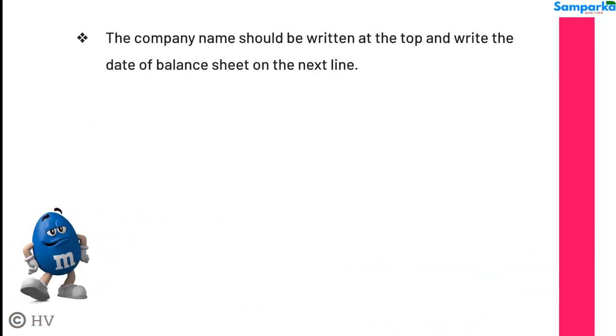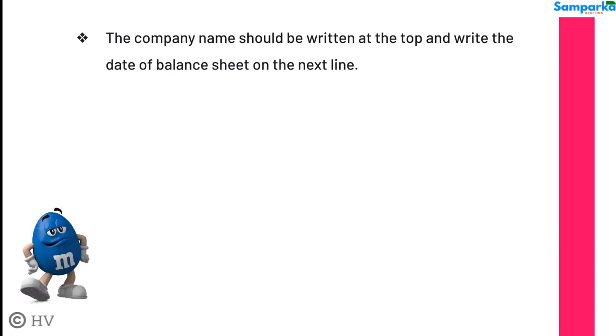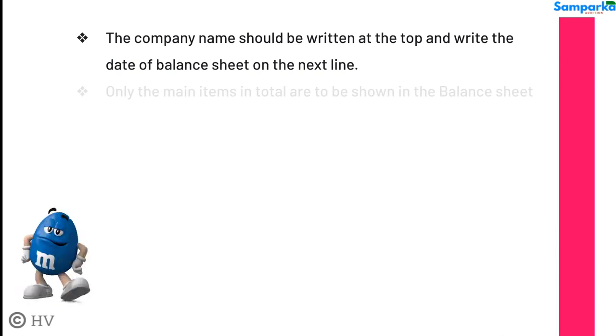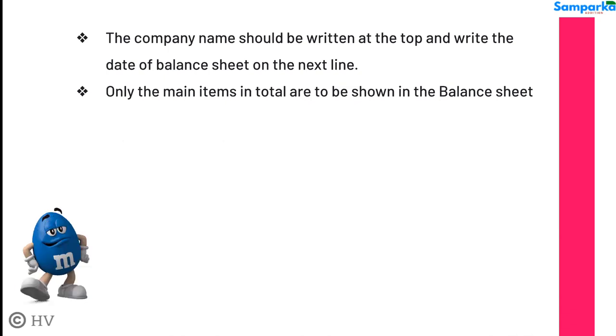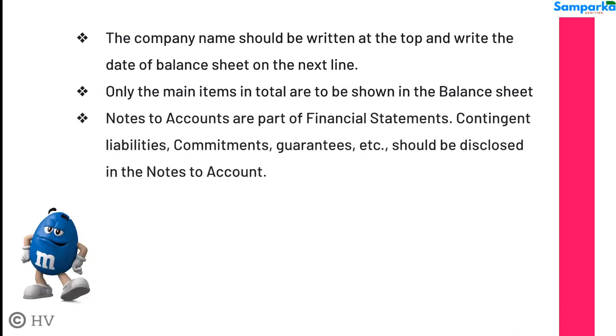The company name should be written at the top and the date of the balance sheet on the next line. Only the main items in total are to be shown in the balance sheet. Notes to accounts are part of financial statements.